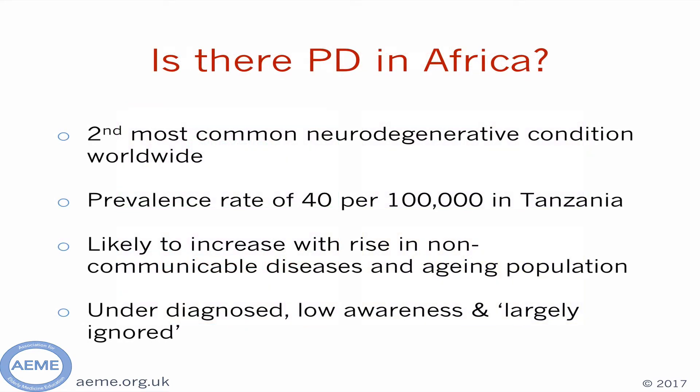So we have discussed what Parkinson's disease is and its features, but now we need to look at how it is relevant to your work. Is there Parkinson's disease in Africa? The answer is yes. Parkinson's is the second most common neurodegenerative condition worldwide. A study in rural Tanzania found an age-standardized prevalence of 40 per 100,000 for men and women, with it being more common in men. A systematic review of studies in Africa found that Parkinson's is less common than in high-income countries. However, as this is associated with ageing, as the population of Africa is getting older, the prevalence is likely to increase.